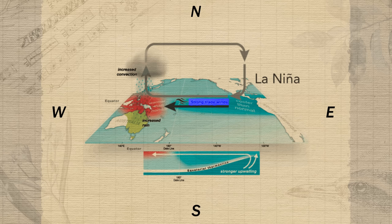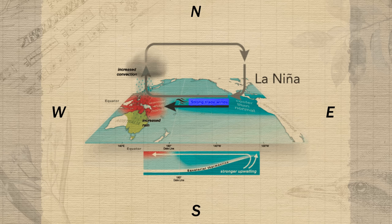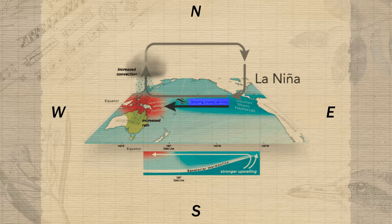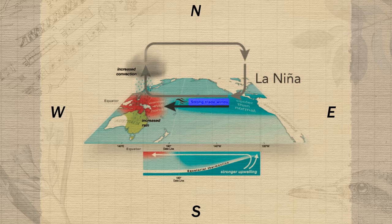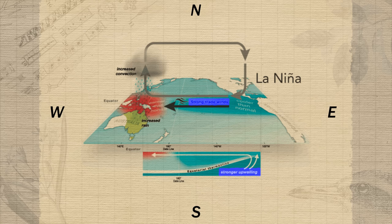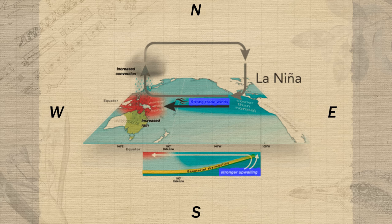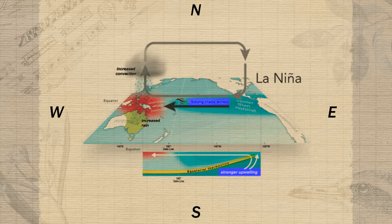During a La Niña year, the eastern trade winds are re-established and even intensified, resulting in greater-than-normal movement of warm surface waters westward. This brings warmer-than-normal weather and higher-than-average rainfall to Southeast Asia and Australia — which may experience flash flooding. South America experiences colder and drier conditions, causing droughts in coastal regions. However, the stronger trade winds create stronger upwelling along South America's coast, producing a steeper thermocline and bringing up more cold, oxygen- and nutrient-rich deep ocean water to support the fisheries.